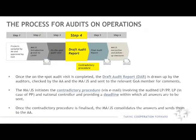Once the on-the-spot audit visit is completed, the draft audit report is drawn by the auditors, checked by the audit authority and the MAJS, and can be commented on by the relevant GOA member. The MAJS initiates the contradictory procedure involving the audited lead partner, project partner, and national controller, providing a deadline within which all answers should be received. In case the revised draft report has no findings, no contradictory phase with the beneficiaries is foreseen.